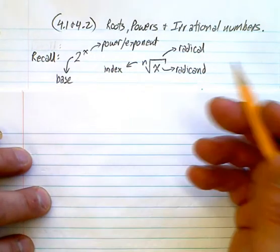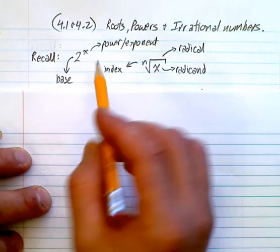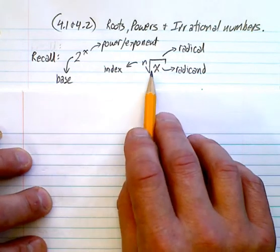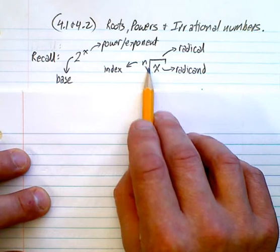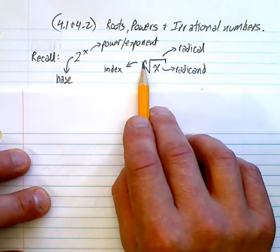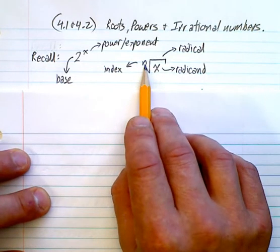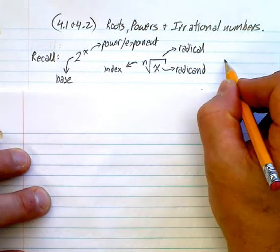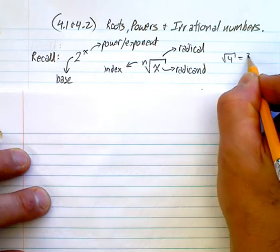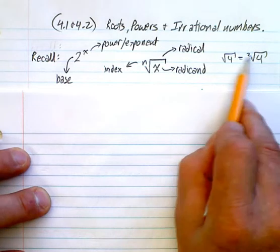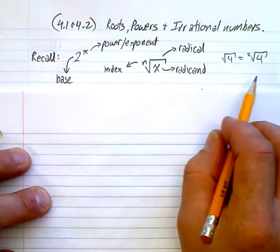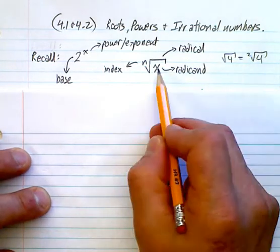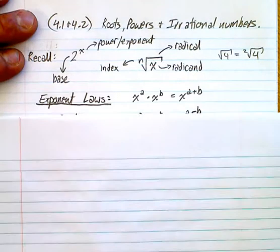When we deal with radicals, the radical is this symbol here. The index is on the outside. Notice that if we have a square root, like the square root of 4, there's actually a 2 there but we don't put it. The 2 is implied. What's inside is called the radicand.